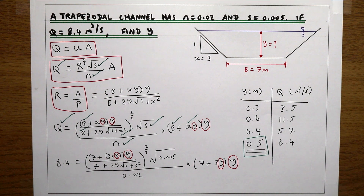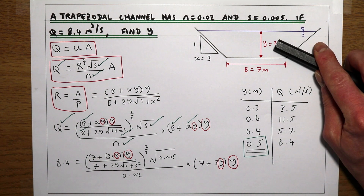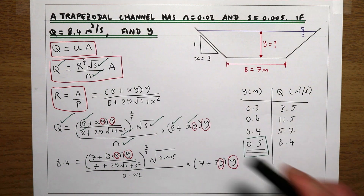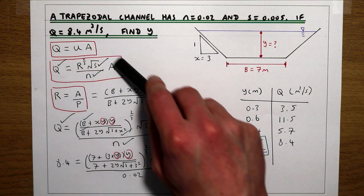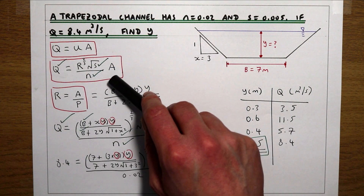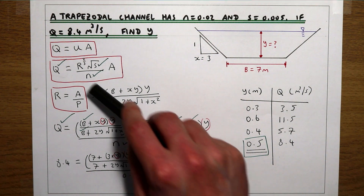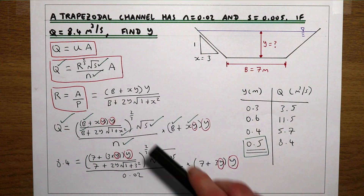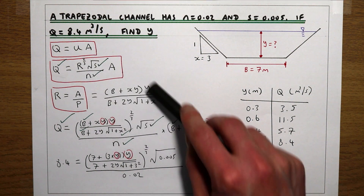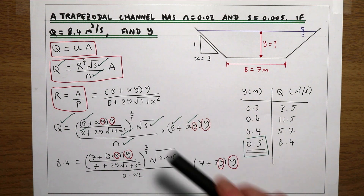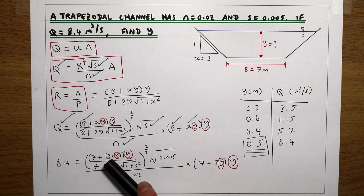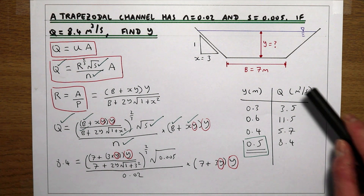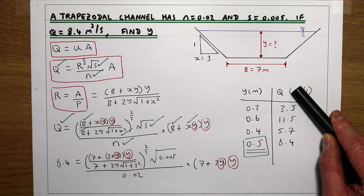To summarise: for a trapezoidal channel, to find flow depth from a given Q, set up Manning's equation as Q = UA, replace the hydraulic radius and area with functions of Y only, then solve by trial and error until the calculated Q matches the target discharge.